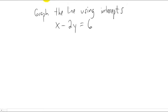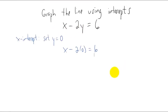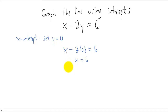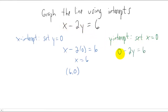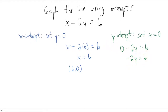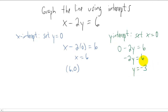Let's do this one more time before the quiz. To find the x-intercept, we always set y equal to zero. Plugging in y equals zero, that term goes away completely and we're left with x equals six, giving us the point (6, 0). To find the y-intercept, we set x equal to zero. Plugging that into the original equation gives us negative 2y equals 6. Dividing both sides by negative two, we get y equals negative three. So the y-intercept is the point (0, negative three).